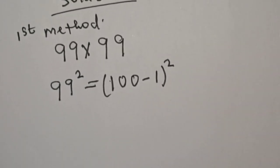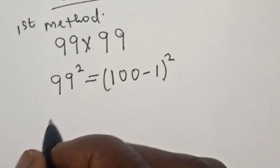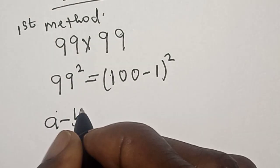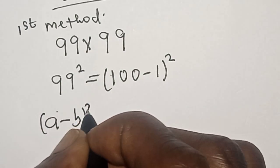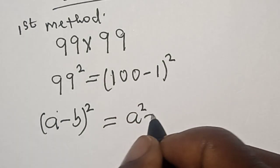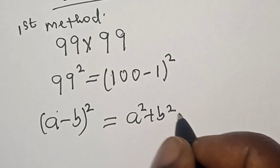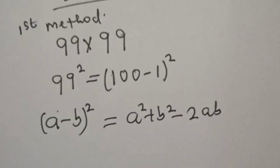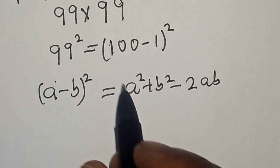And note that if you have (a - b)², this is equal to a² + b² - 2ab. Now our a is 100 and our b is 1.